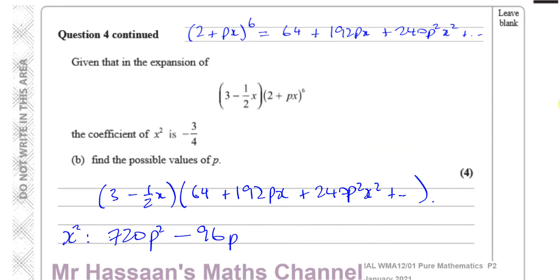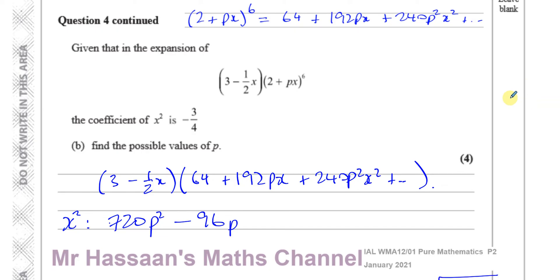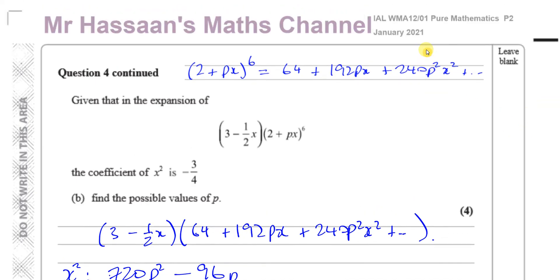That's the answer for part B of question number four. If you'd like to see other questions from this paper, click on the link. For other binomial expansion questions from P2, click that link. You can subscribe to the channel by clicking here, and at the top you'll find another P2 paper you might want to watch. Thank you for watching and see you soon.